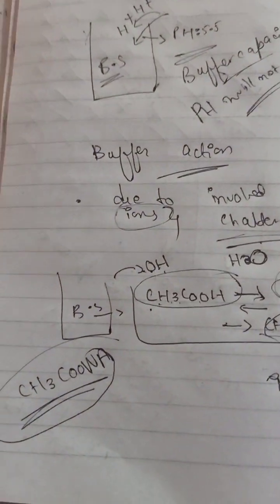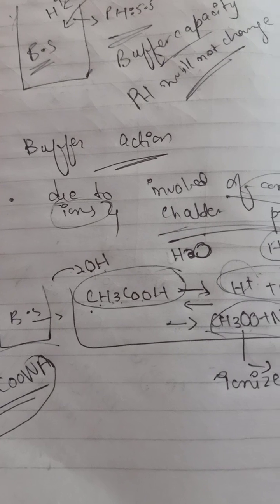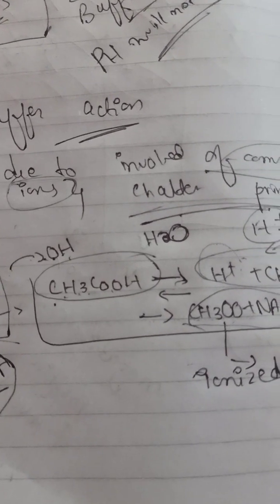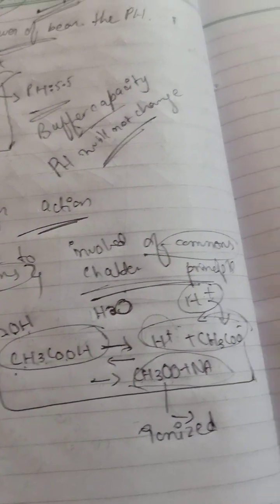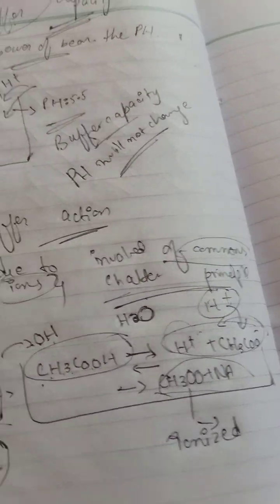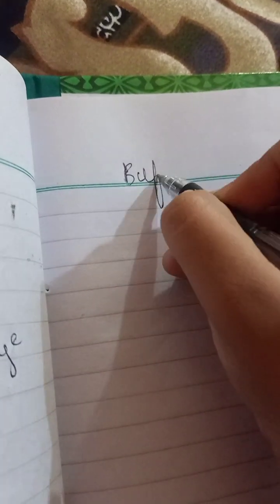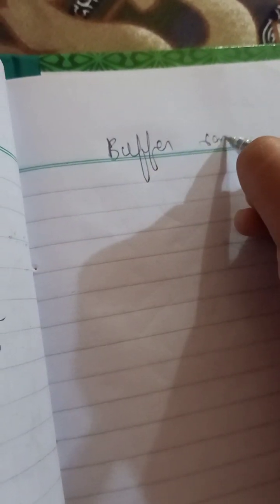This forward and backward shifting of reactions maintains the pH — there is basically no net change occurring. This is why we call it a buffer solution.